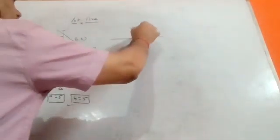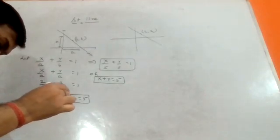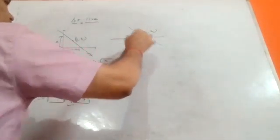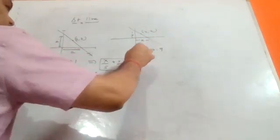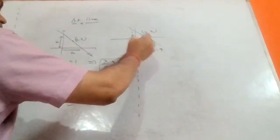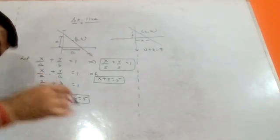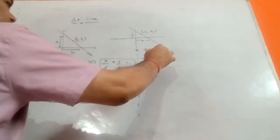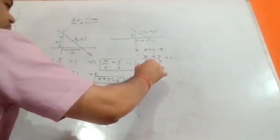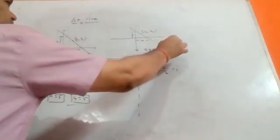The next problem: find the equation of the line passing through the point two comma two, cutting intercepts on the axes such that a plus b equals nine. Again using intercept form, let the equation of the line be x upon a plus y upon b equal to one. The line passes through two comma two.